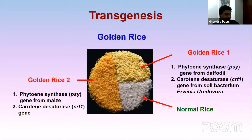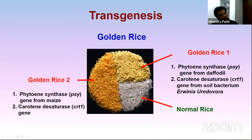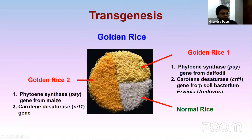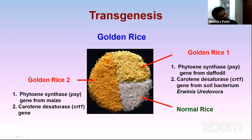A representative example of transgenesis is golden rice. Normal rice lacks two crucial genes in the endosperm that synthesize beta-carotene. What they did was introduce two genes — phytoene synthase from daffodil, and carotene desaturase from Erwinia uredovora — into rice. Now rice makes this yellow pigment, which is beta-carotene, a pro-vitamin A. This is called Golden Rice 1, but it produces a lower amount of beta-carotene. They further improved it by taking the phytoene synthase gene from maize, and now it produces a much larger amount of beta-carotene.